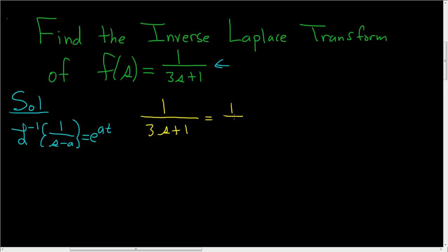So we'll factor out 1 third, in other words factor out 3 from the denominator. So this is 1 over s plus 1 third.